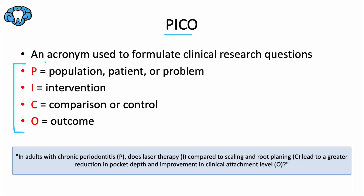The first is P, which defines the specific population or patient group being studied, or the specific problem or condition being addressed. I defines the intervention being considered, usually a treatment, a diagnostic test, or some exposure. C specifies the alternative compared to the intervention, which could be a different treatment, a placebo, or no treatment at all — what we would call the control. Typically, the I is some newer, innovative treatment or test being compared with an older, more established, or gold standard type treatment or diagnostic test.